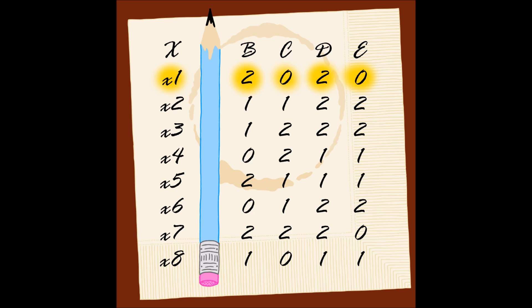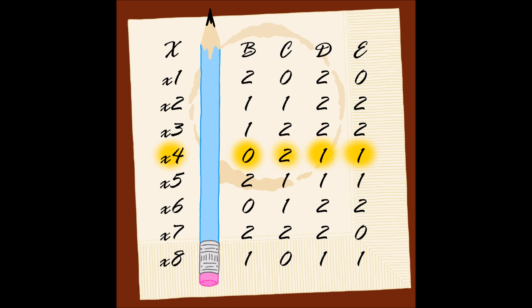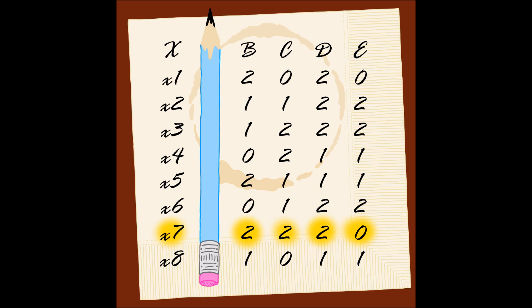We examine X1, X2, X3, X4, X5, X6, X7, and X8. We can see that attribute A is not part of the core, so we can move on to attribute B.